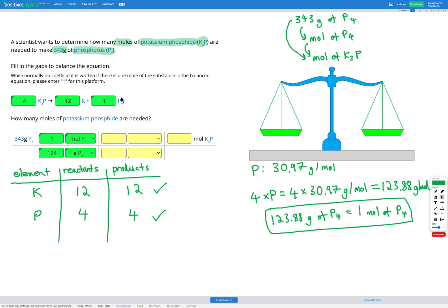So let's go ahead now and use this to find our conversion factor between P4 and K3P. So here's K3P. We've got four of those. Here's P4. We've got one of those. So to write a conversion factor, that tells me that four moles of K3P equals one mole of P4. And that is now going to be my conversion factor that I'm going to use in my dimension analysis table.